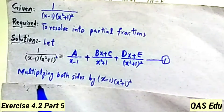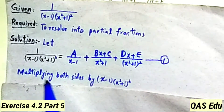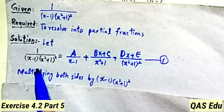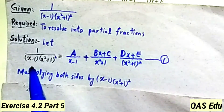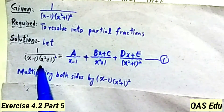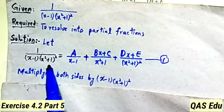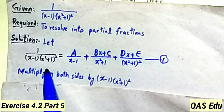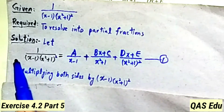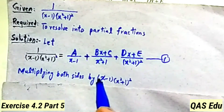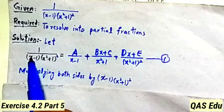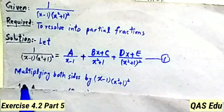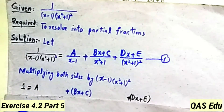The procedure is multiplying both sides by the denominator of the left-hand side, which is x minus 1 into x square plus 1 whole square. This gives us the left-hand side and right-hand side after multiplication.